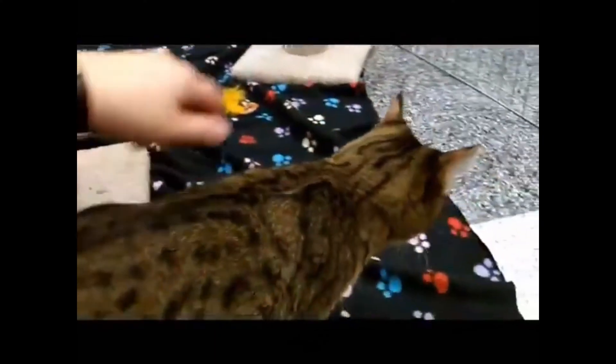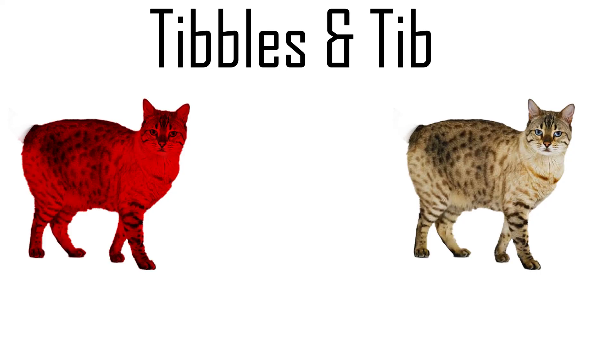This puzzle goes by several names: the Paradox of Decrease, the Puzzle of Dion and Theon, but the most common name nowadays is the Puzzle of Tib and Tibbles. Thank you for watching and I will see you next time.